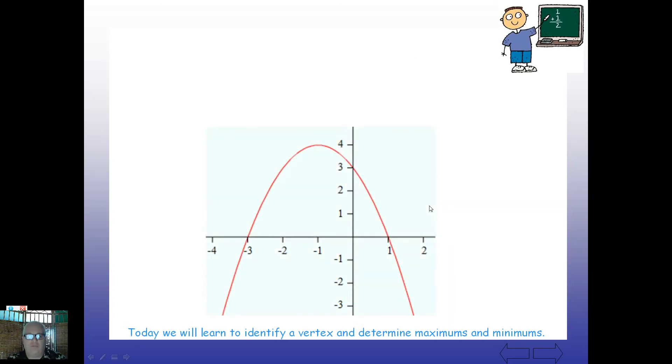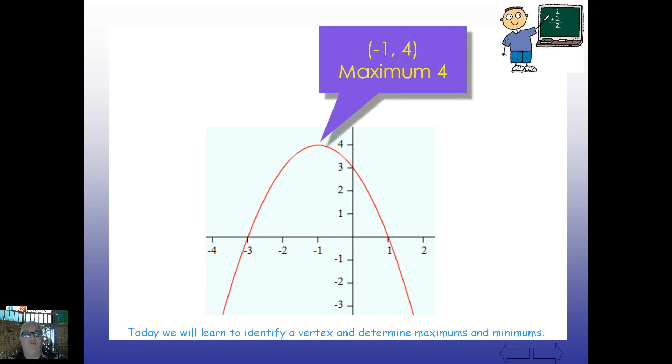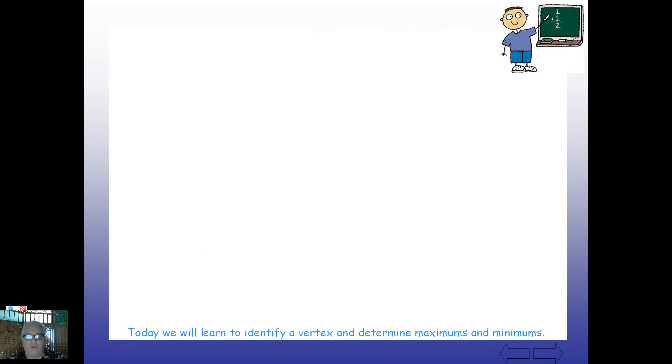And how about this one? Take a look at that. Find the vertex as an ordered pair. Tell me the maximum or minimum. Hopefully you got a vertex of negative one, four, and it has a maximum of four. Pretty simple to see. We're just looking at the graph here, using our eyes to trace up and over. There's also a pure mathematical way of finding that vertex, which we're going to get to pretty soon.